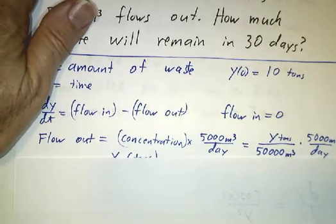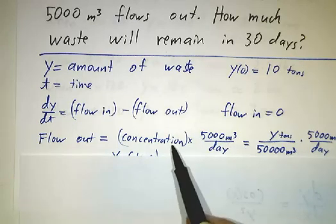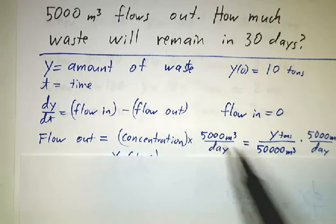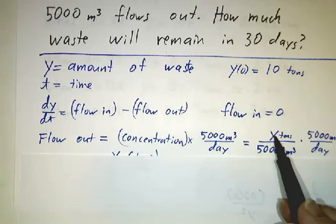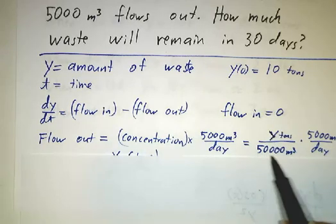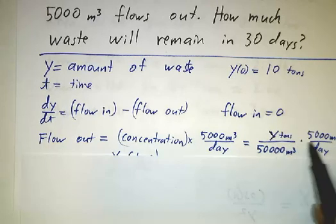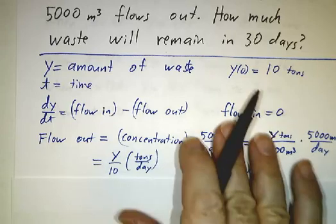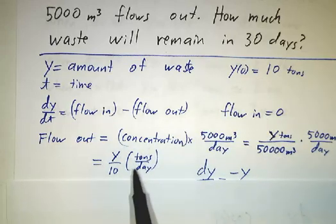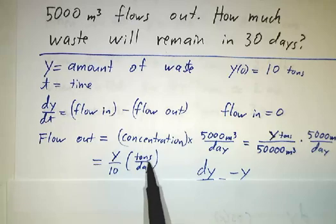Well, we know that every day, 5,000 cubic meters of water flows out. Now how much industrial waste is included in that 5,000 cubic meters? Well, we have to figure out the concentration of waste. So if there's an amount y of toxic stuff and it's diluted among 50,000 meters, the concentration is y divided by 50,000. We multiply that by the 5,000 cubic meters per day that is flowing out, and we get that the outflow of toxic stuff is y over 10, and that's in tons per day if we're keeping track of units.